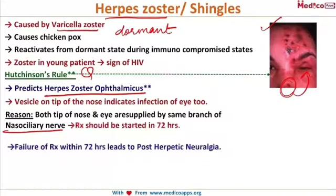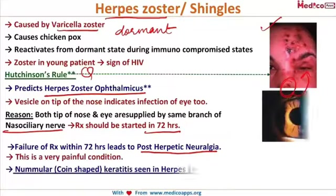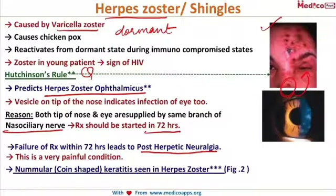This condition requires that treatment be started within 72 hours of diagnosis. Any failure to do so leads to a very excruciating painful condition called postherpetic neuralgia, which occurs usually one to two months after the disease subsides. If you do not treat within 72 hours, it leads to postherpetic neuralgia.